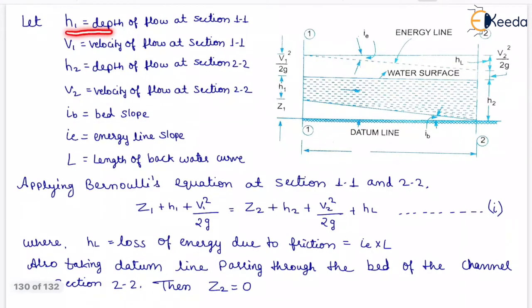Let h1 is the depth of flow at section 1-1 which is shown here. V1 is the velocity of flow at section 1-1. h2 is the depth of flow at section 2-1 which is shown here. V2 is the velocity of flow at section 2-2. iB is the bed slope which is shown here. iE is the energy line slope which is shown here, and L is the length of backwater curve.